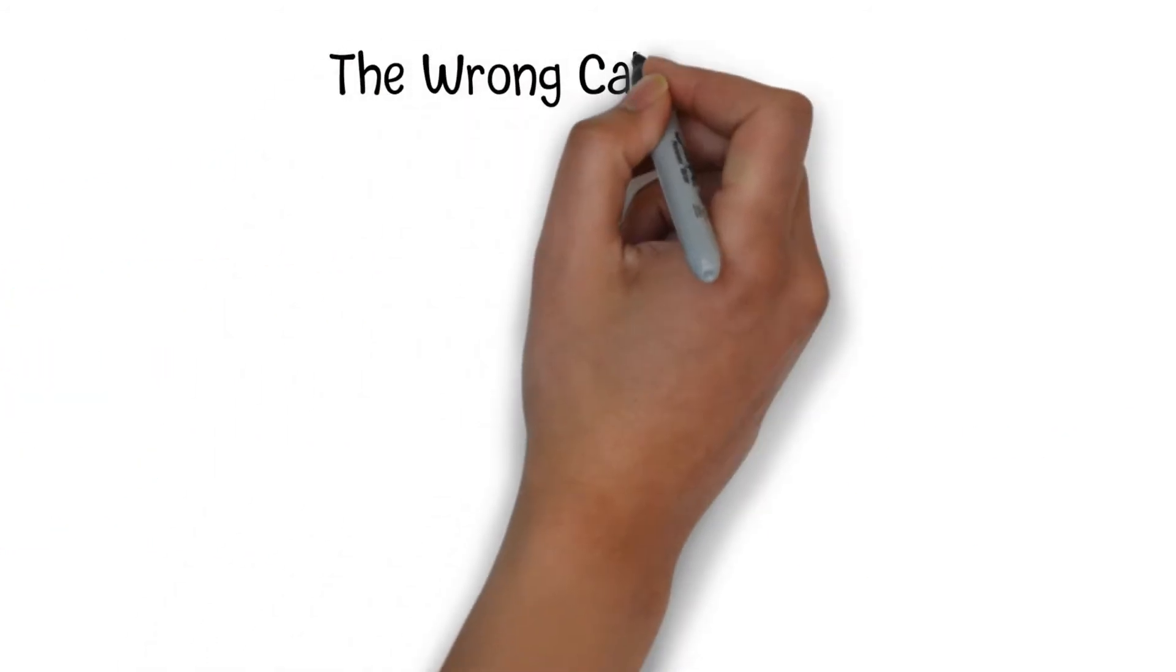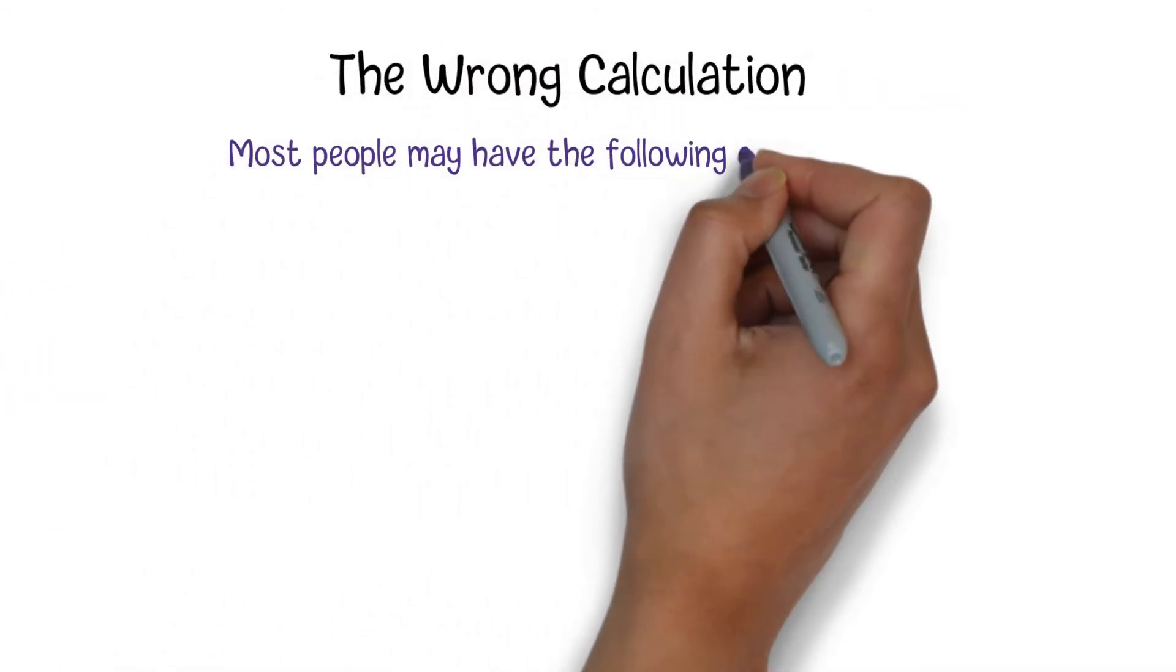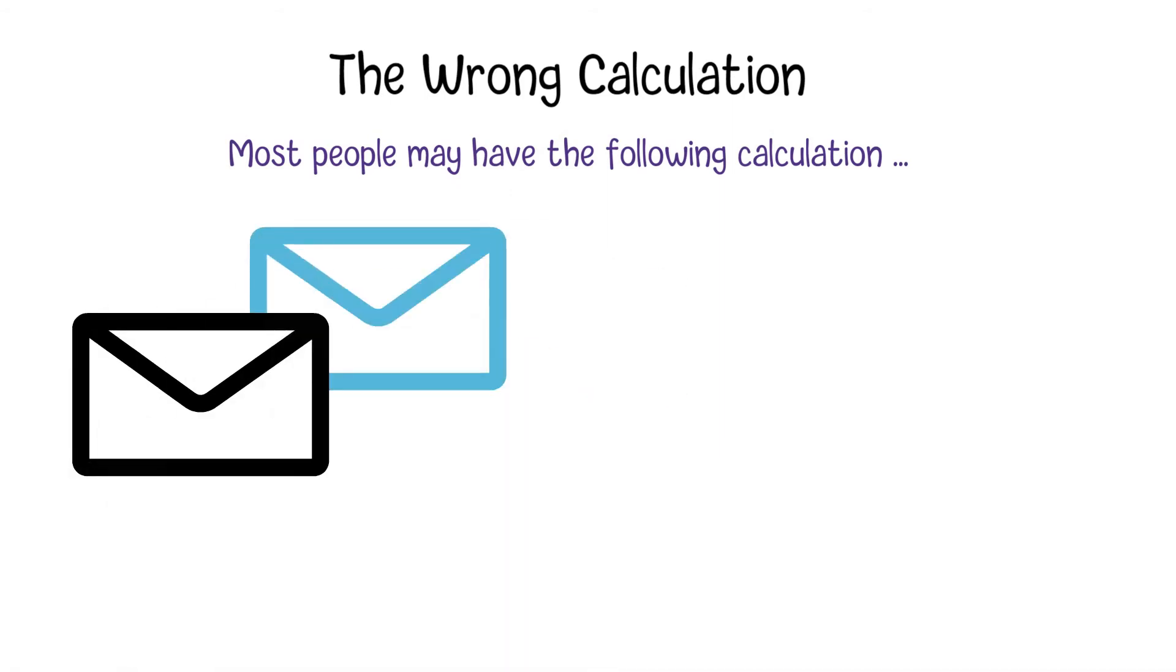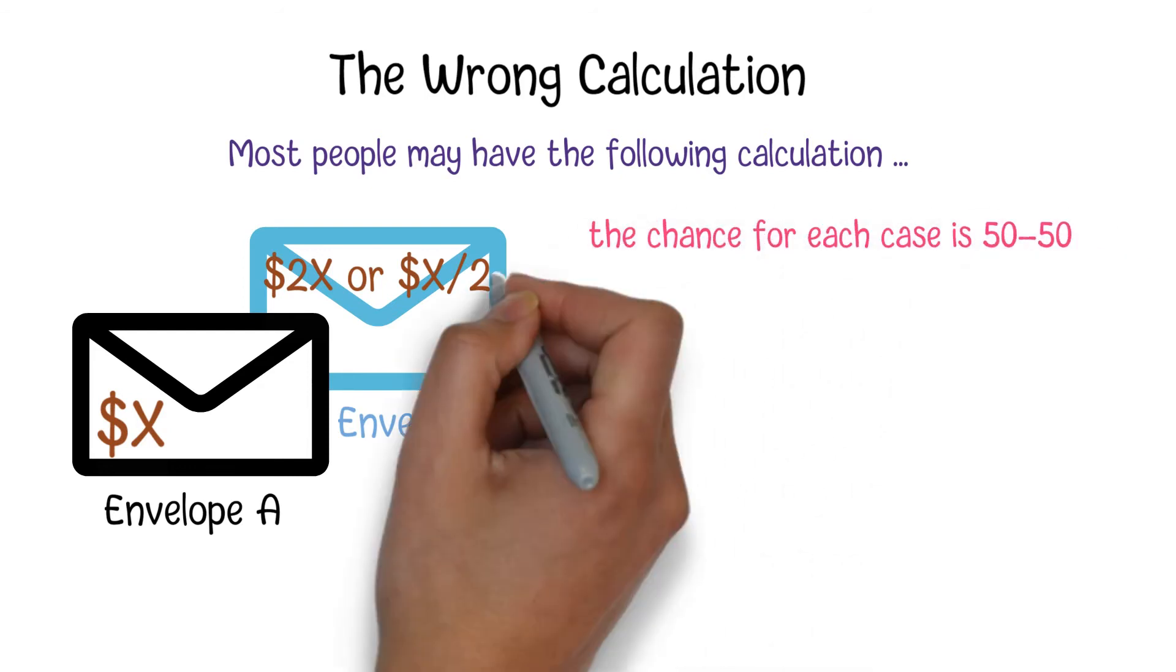Most people may have the following calculation. Let's assume that you randomly pick up an envelope called A, and the amount of money in it is X. So the amount of money in another envelope is either double or half of X, since the chance for each case is 50-50.